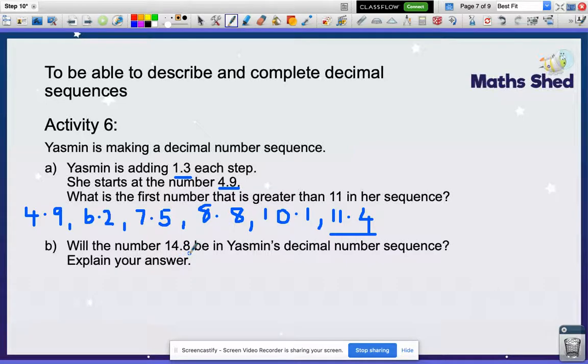Will the number 14.8 be in her number sequence? Well, we'd have to carry on doing the same thing, adding 1.3 until we got to there. 12.7, 13, 14, and add on another 1.3: 15.3. So would it be in there? No. And my explanation is my number sequence.